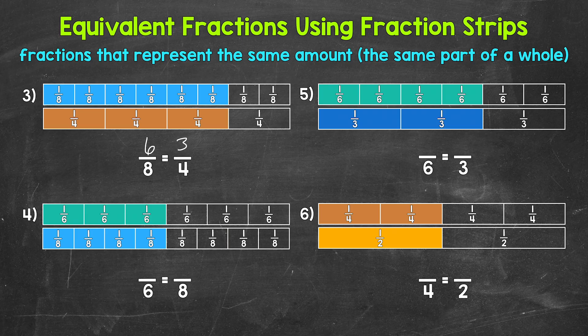Moving on to number four: the top fraction strip is divided into six equal parts and three of those parts are shaded, so it's showing three sixths. That's going to be equivalent to how many eighths? The fraction strip below has been divided into eight equal parts and four are shaded, so three sixths is equivalent to four eighths.